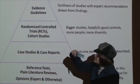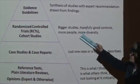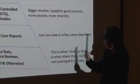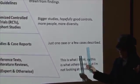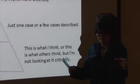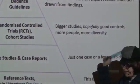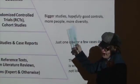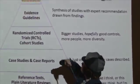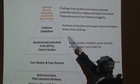Next up on the evidence-based practice information type pyramid are the bigger, fancier studies — the randomized control trials and cohort studies. They have more people in them and hopefully good controls: this group gets the treatment, this group does not, or one group gets the good treatment and one gets the comparison. More people hopefully gives you more diversity, so the findings from that study might be more applicable to your patient.